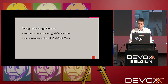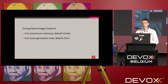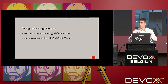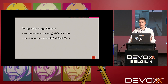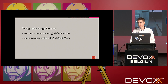When tuning native image for lower footprint, the main parameters are XMX for maximum memory and XMN for new generation size — the heap portion reserved for new objects. For typical web servers, a new generation size of around 16–32 megabytes is usually sufficient. These are the main parameters that trade off peak throughput against memory consumption, and you can explore various settings to find the best point for your workload.